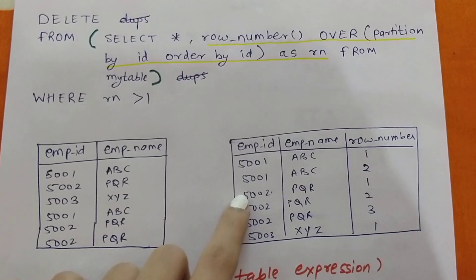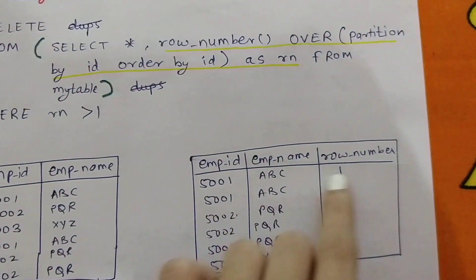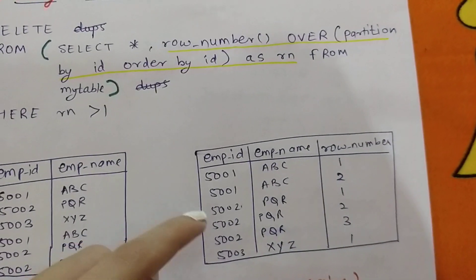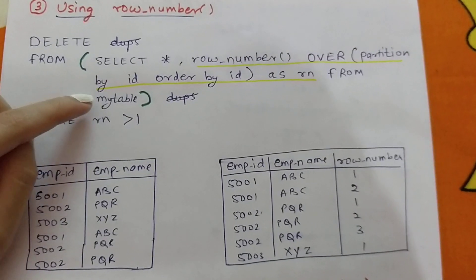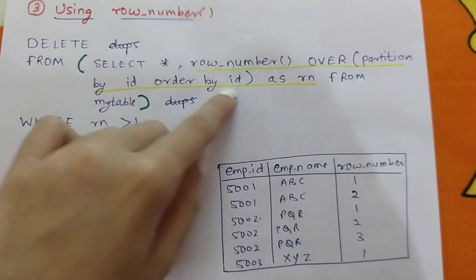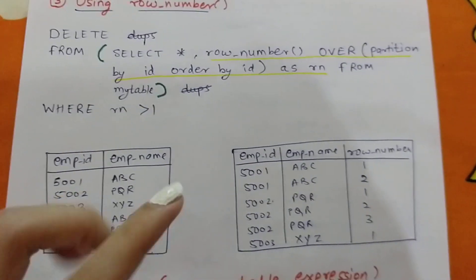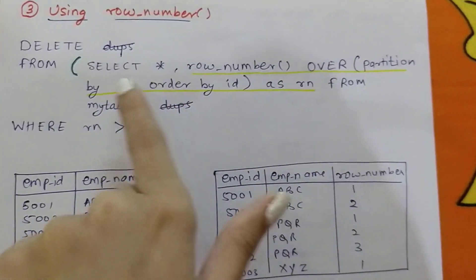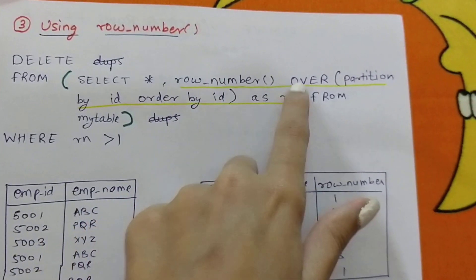So 5001 has two rows numbered 1 and 2. 5002 has three rows numbered 1, 2, 3. 5003 has one row numbered 1. ORDER BY id orders them by emp_id. This entire expression — ROW_NUMBER() OVER (PARTITION BY id ORDER BY id) — is aliased as rn. So the inner query returns the table with this rn column appended.